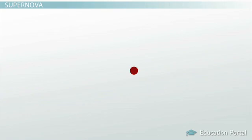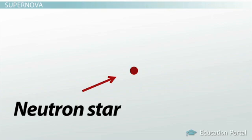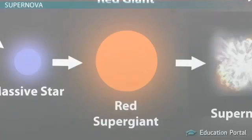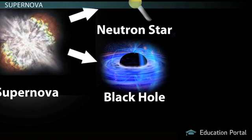All that remains of the original star is a small, super-dense core composed almost entirely of neutrons. This is a neutron star. If the original star was extremely big, even the neutrons don't survive and the core collapses, forming a black hole.